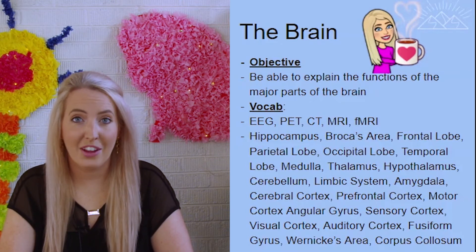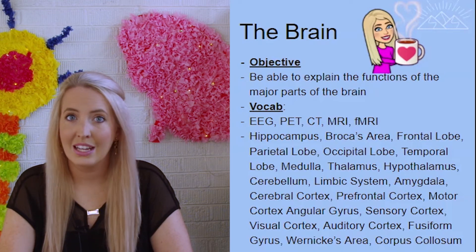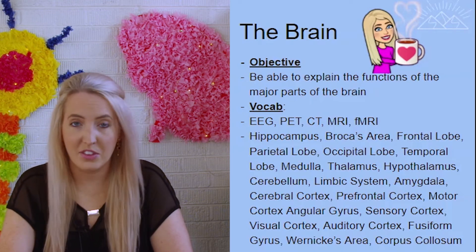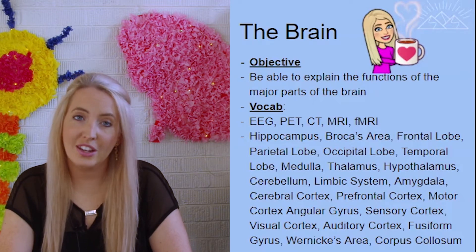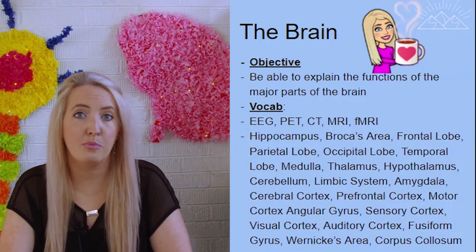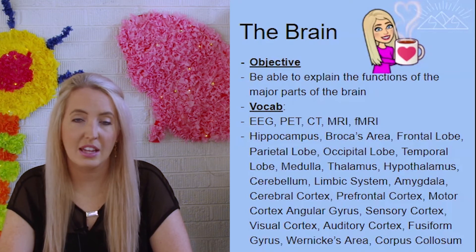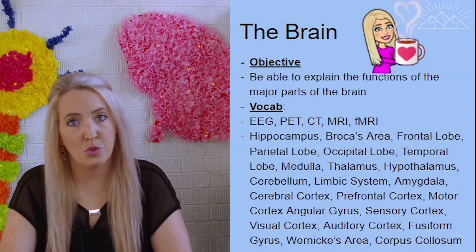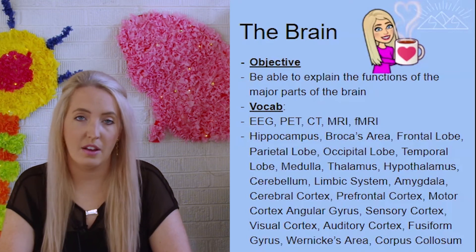But before we get there, we should probably start by talking about how do we know where all of these parts of the brain are and what they do. To look at that, we need to look at the different types of brain scans that we can do to understand both the structure and the function of the brain.